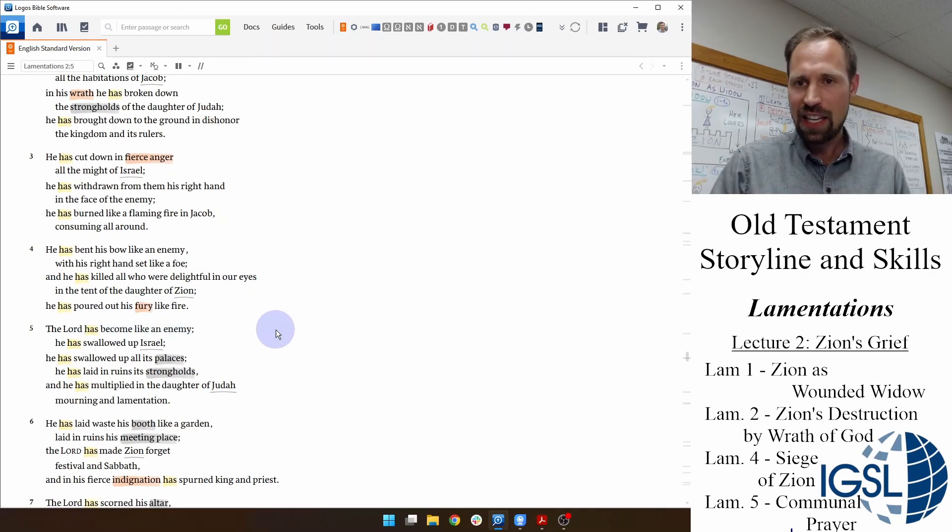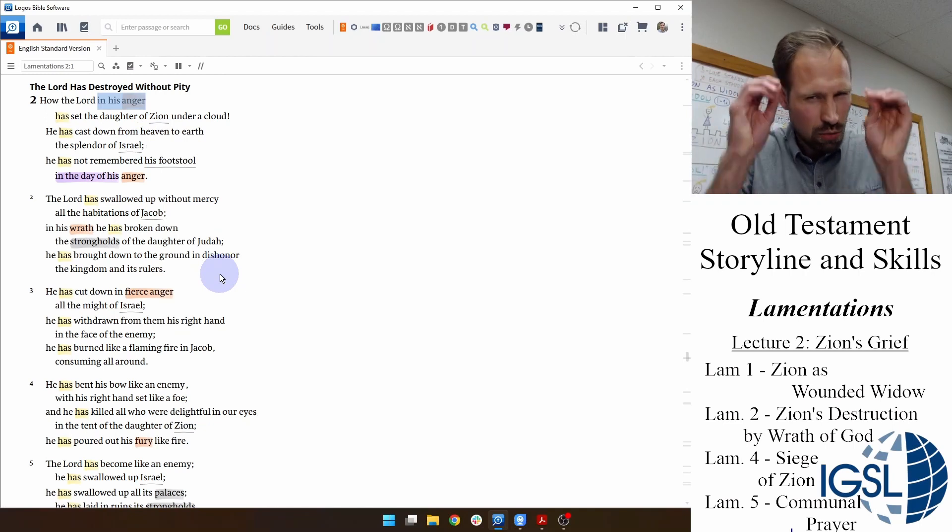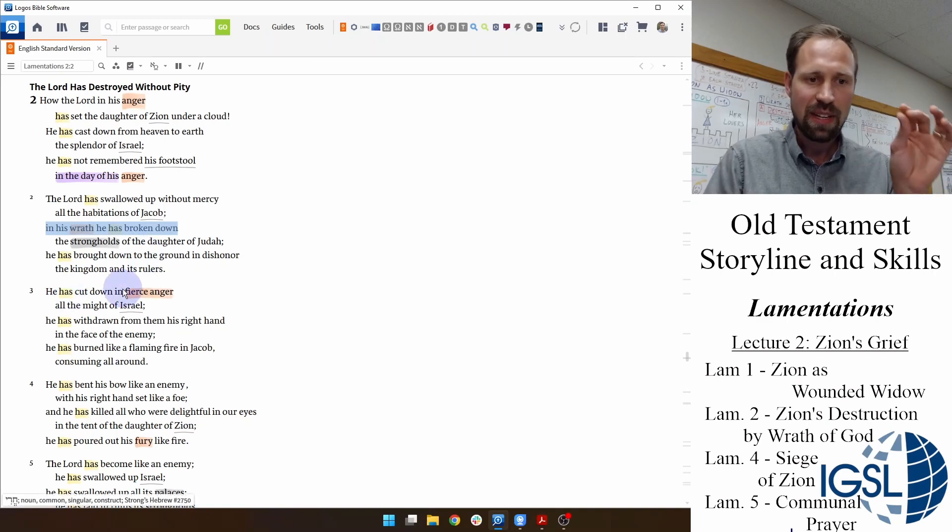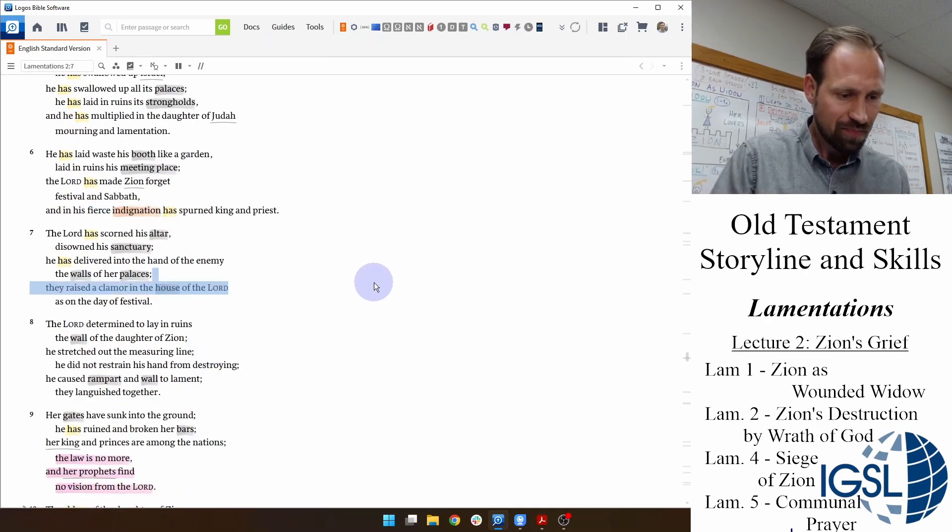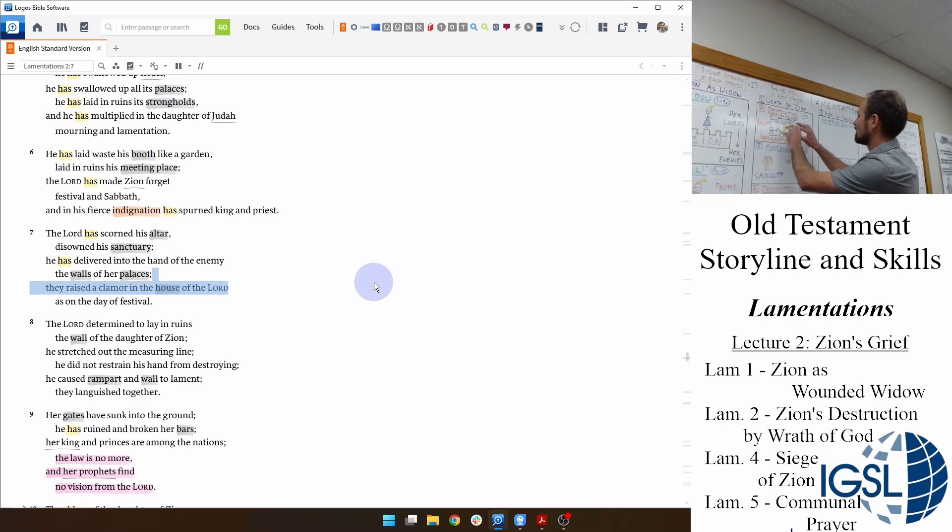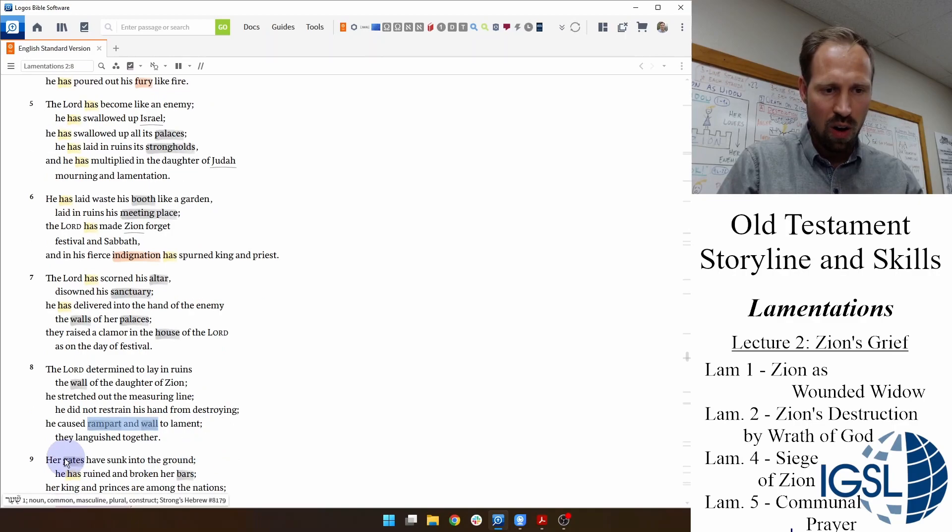He has become like an enemy. And the poet is not going to attempt to hide that Yahweh did this in his anger, his righteous anger as a covenant-making God. In his wrath, he broke it down. He cut them down in his fierce anger. He poured out his fury like fire, his fierce indignation. And all of it was directed against the city, the buildings, of course, the people as well. But in these opening lines, the focus is on the structures which are being destroyed. Look at this. The palaces, strongholds, the booth, the meeting place, altar, sanctuary, walls and palace, rampart, wall, gates and bars, all broken down.